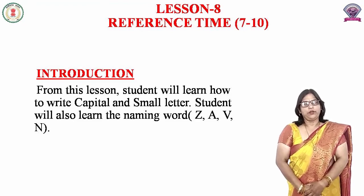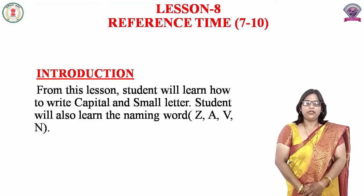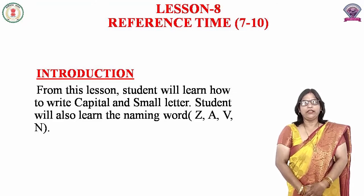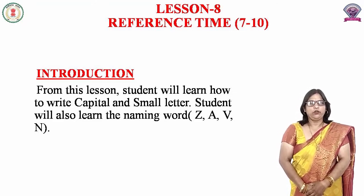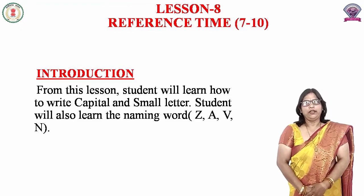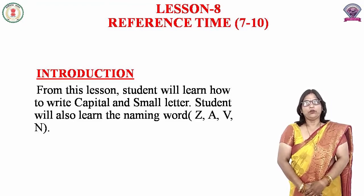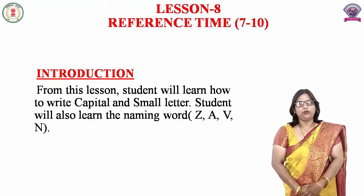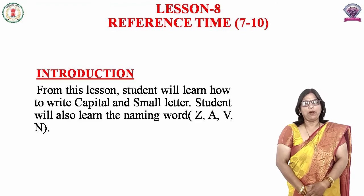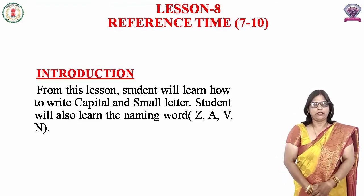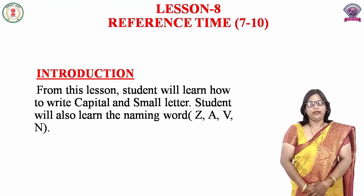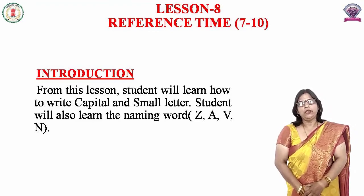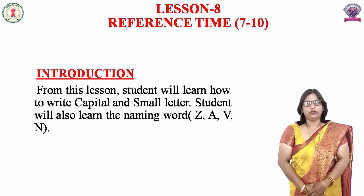26 letters हमारी English alphabet में होते हैं, जिसमें से A, E, I, O, U — ये जो 5 letters हैं, वो vowel कहलाते हैं, और बाकी के बचे 21 letters हैं, वो consonant कहलाते हैं। आज हम इन्हीं में से कुछ letters से बनने वाले शब्दों को सीखेंगे, और इन्हें आप बाद में अपनी copy में लिखने का भी प्रयास करेंगे। ये जो नाम हैं, इन्हें हम naming word भी कहते हैं, जो कि English में noun और Hindi में संज्ञा बोलते हैं।